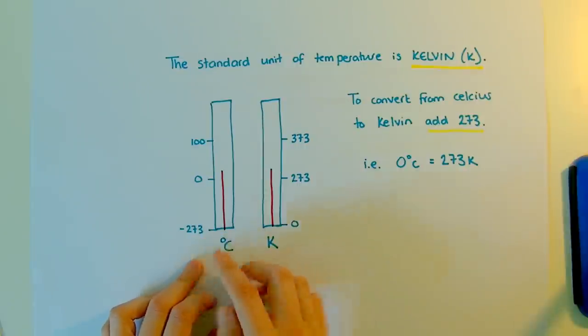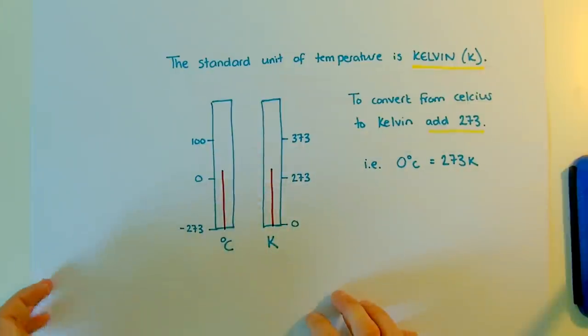So if you want to convert from Celsius to Kelvin, all you have to do is add on 273. So zero degrees Celsius is 273 Kelvin.